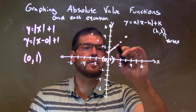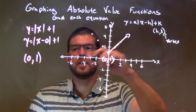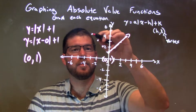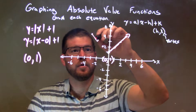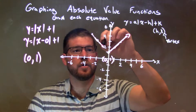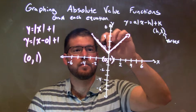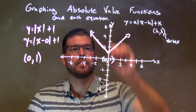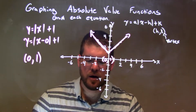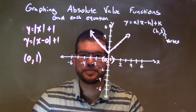Connect the dots, making it a V. It's a V-shape because it's a positive a value — a positive one. And now we have our graph, our final answer.